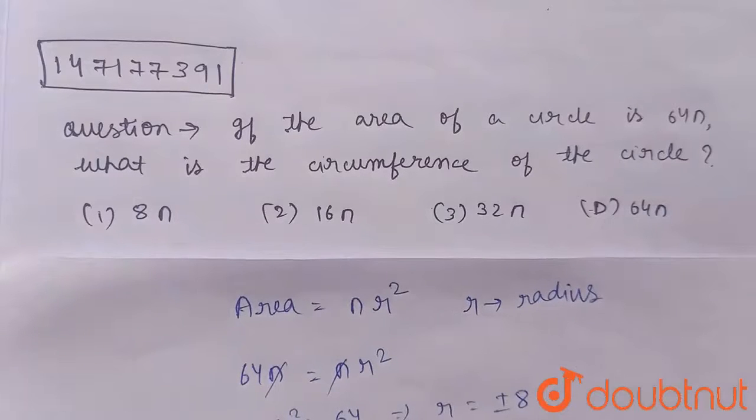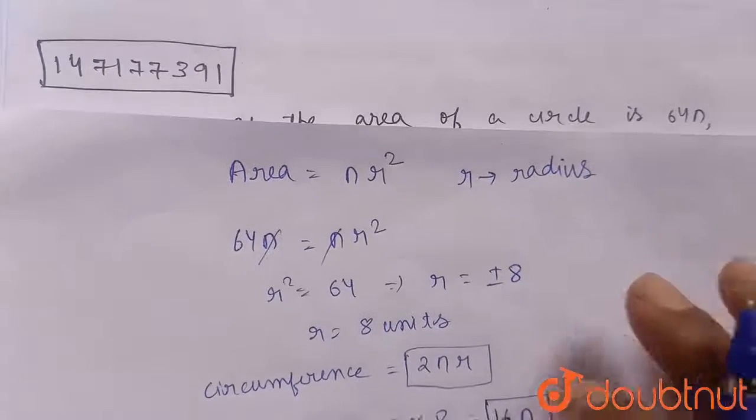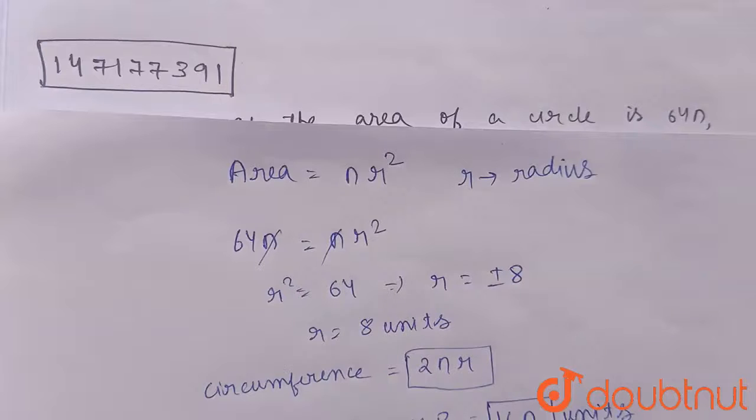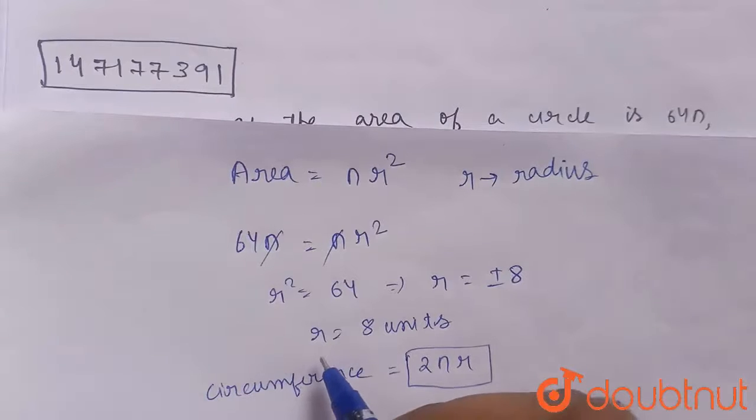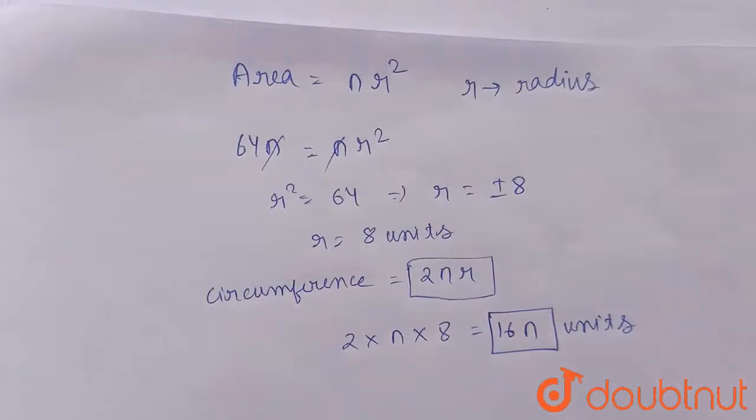In this question, first you need to understand that πr² and 2πr are the basic two formulas for finding the area and circumference of the circle. Then using basic algebra, we find out the value of r, then using this r we find out the circumference of the circle. I hope you understood. Thank you very much.